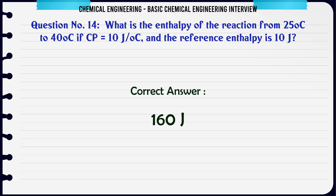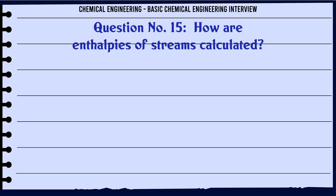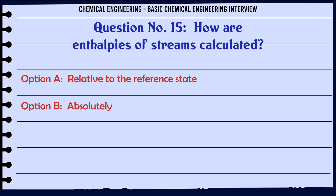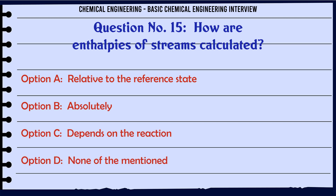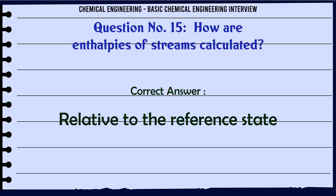How are enthalpies of streams calculated? A) Relative to the reference state. B) Absolutely. C) Depends on the reaction. D) None of the mentioned. The correct answer is: relative to the reference state.